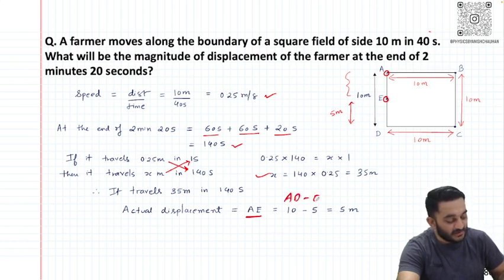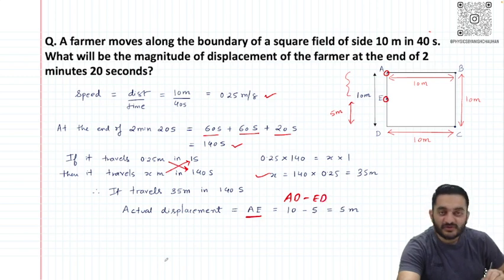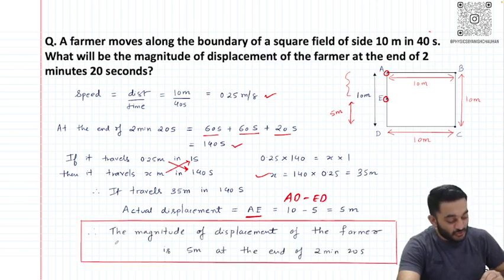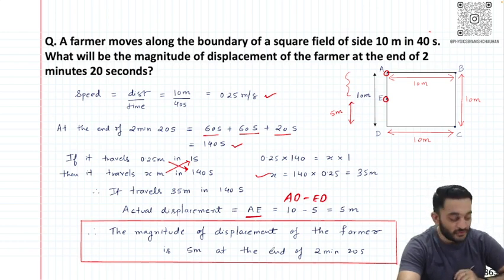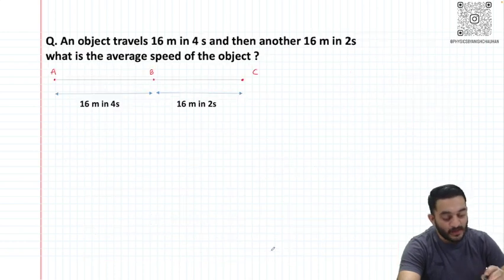When I do AD minus ED, I get my value as 5 meters. So the magnitude of displacement of the farmer is 5 meters at the end of 2 minutes 20 seconds.